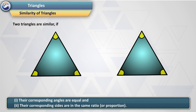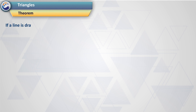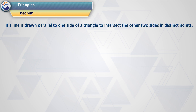Similarity of triangles. Two triangles are similar if: 1, their corresponding angles are equal, and 2, their corresponding sides are in the same ratio or proportion. Basic Proportionality Theorem: if a line is drawn parallel to one side of a triangle to intersect the other two sides in distinct points, the other two sides are divided in the same ratio.